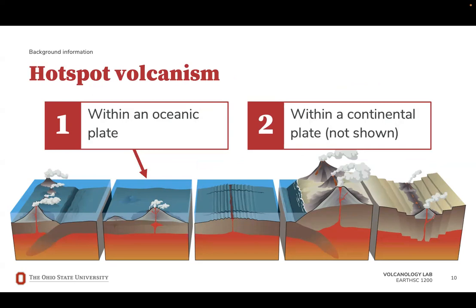Hotspots are areas where plumes of hot mantle material rise and melt through the lithosphere, causing volcanic activity at the surface. Hotspots are caused by mantle plumes that stem from deep in the mantle, not by plate tectonics. Magma in these cases forms from decompression melting — as the magma rises, decreased pressure causes melting. Hotspots can be located anywhere on a tectonic plate, and the location might change based on how the plate is moving. It's important to note that the mantle plume itself doesn't move; it's just the plate that moves over top of it. Hotspots remain mostly static over long periods of time, with the plates moving across them. As the plates move, new volcanoes form over a long period of time, creating a chain of volcanoes that follow the direction of plate motion. Hotspot volcano chains are extremely useful for determining the direction and rate of plate motion.